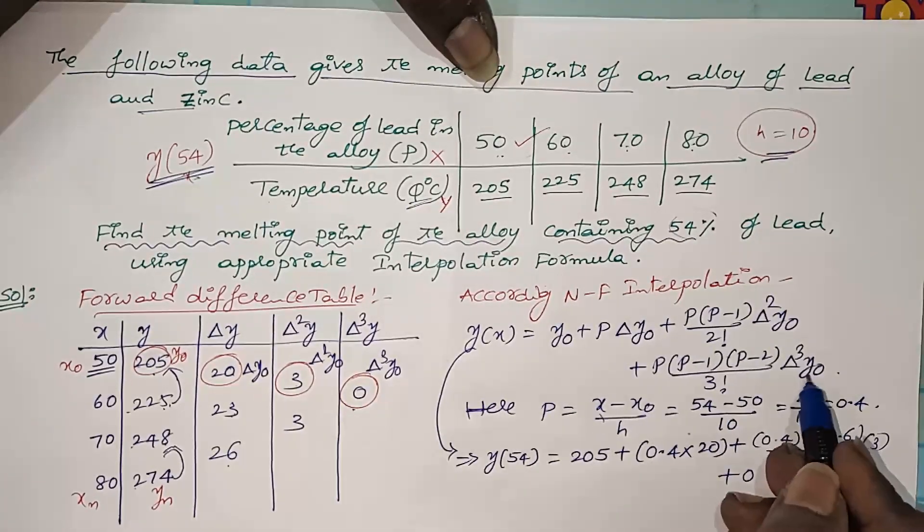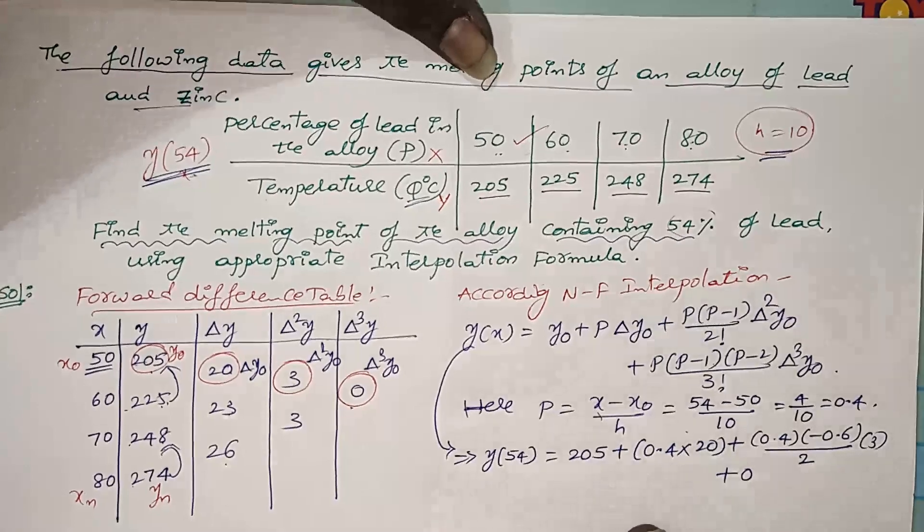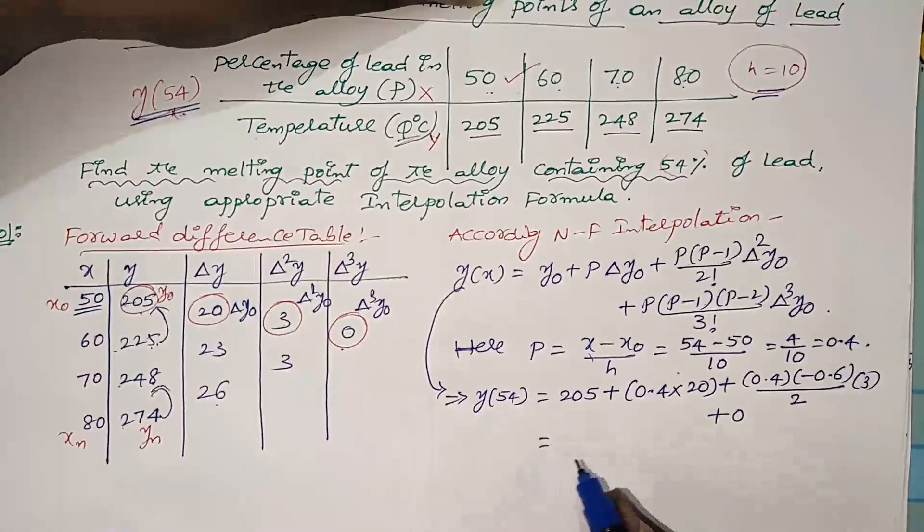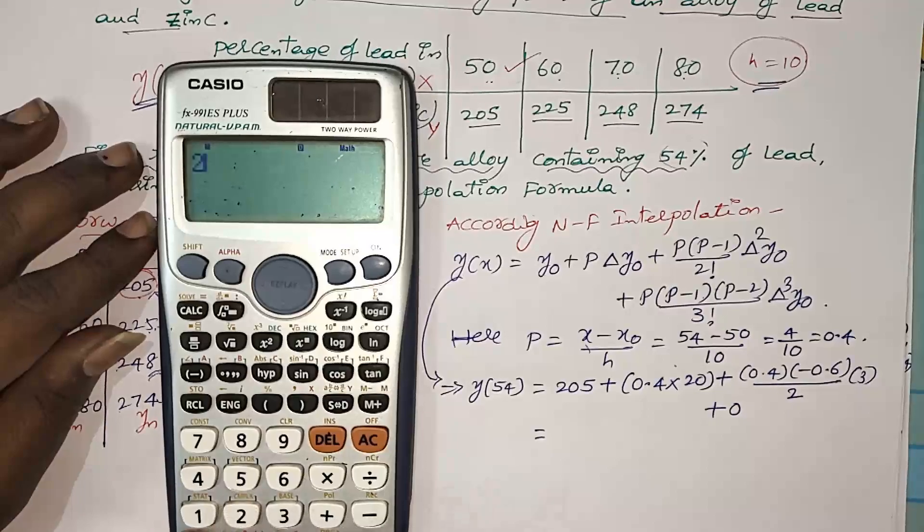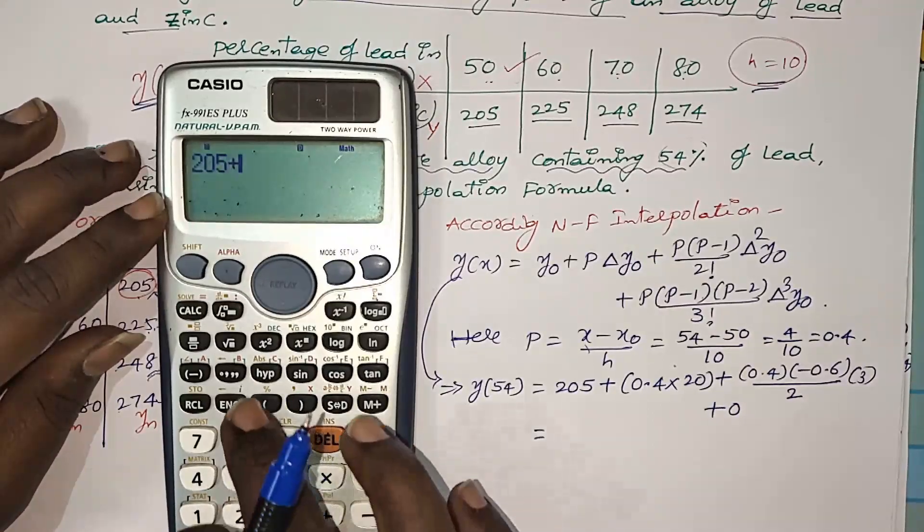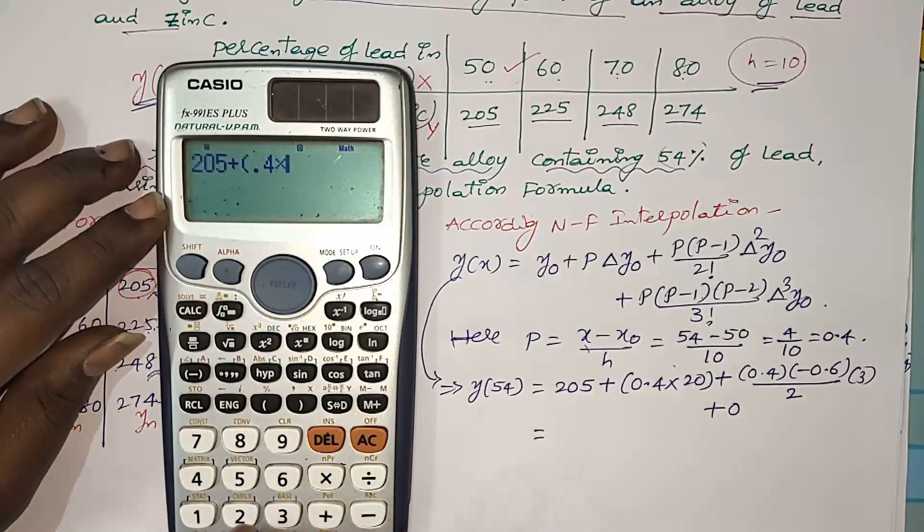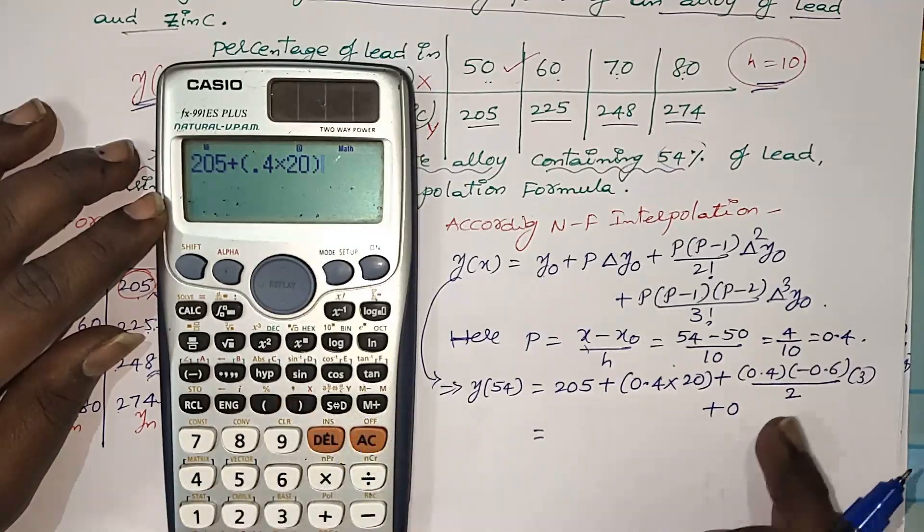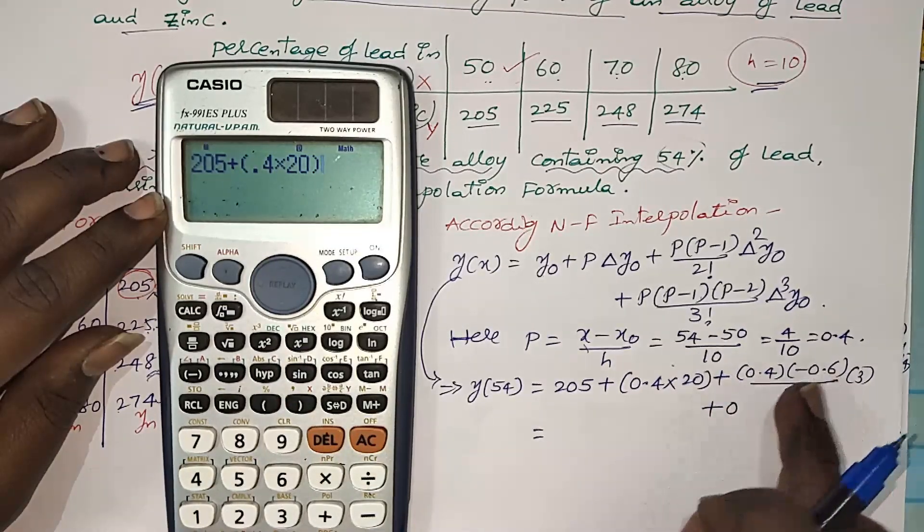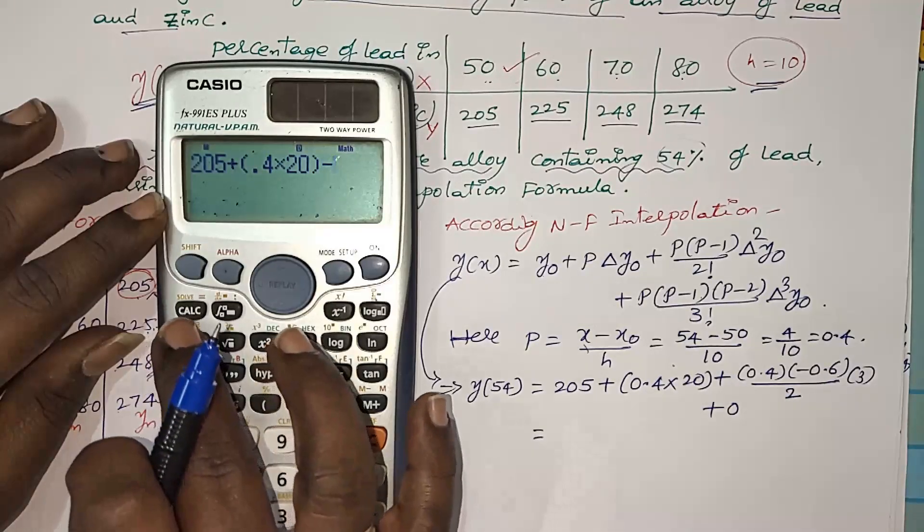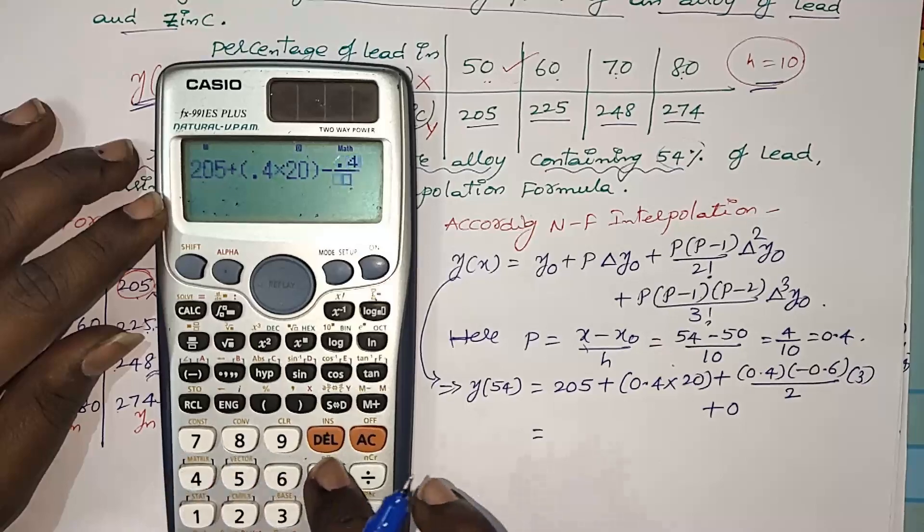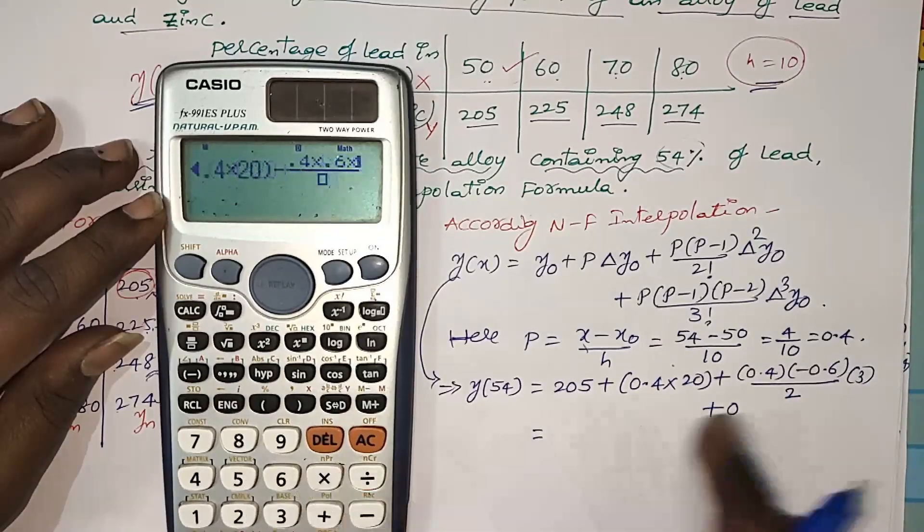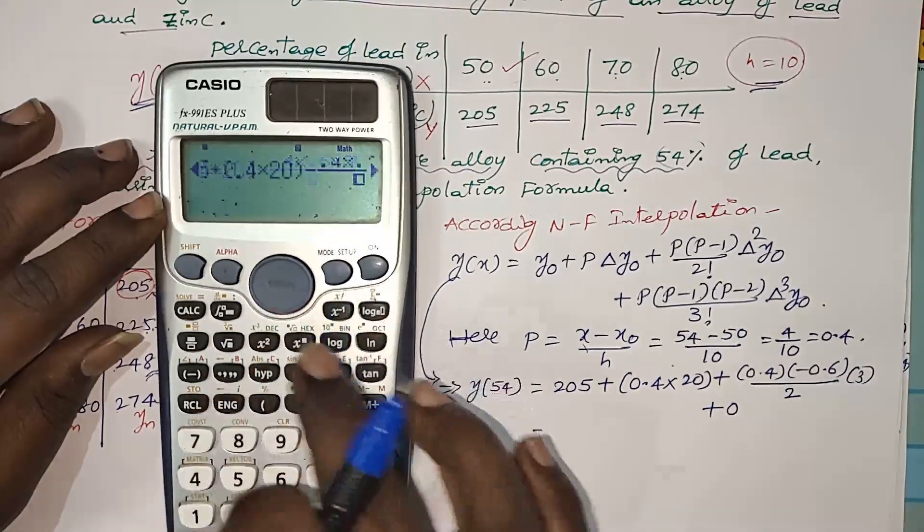Using calculator we can easily get this. 205 plus 0.4 into 20 close the brackets, and plus into minus becomes negative, so taking negative sign: 0.4 into 0.6 into 3 divided by 2.